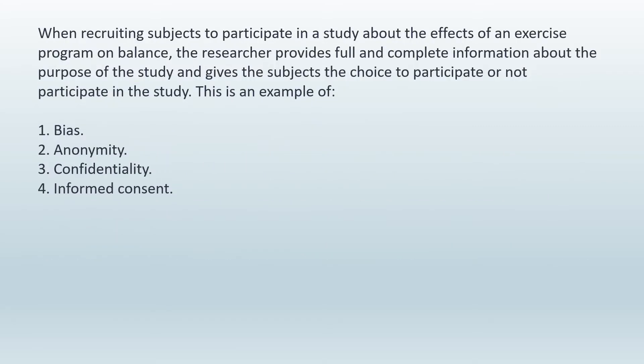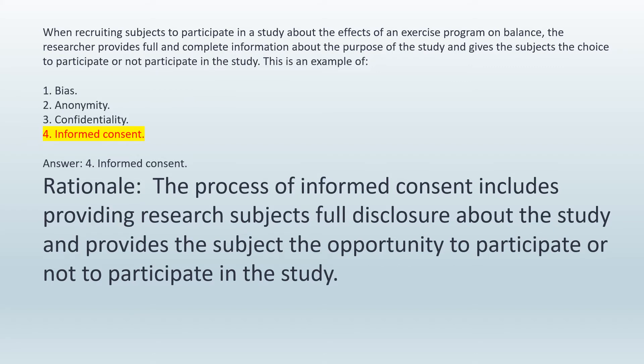When recruiting subjects to participate in a study about the effects of an exercise program on balance, the researcher provides full and complete information about the purpose of the study and gives the subjects the choice to participate or not participate in the study. This is an example of: 1. Bias. 2. Anonymity. 3. Confidentiality. 4. Informed consent. Answer: 4. Informed consent. Rationale: The process of informed consent includes providing research subjects full disclosure about the study and provides the subject the opportunity to participate or not participate.